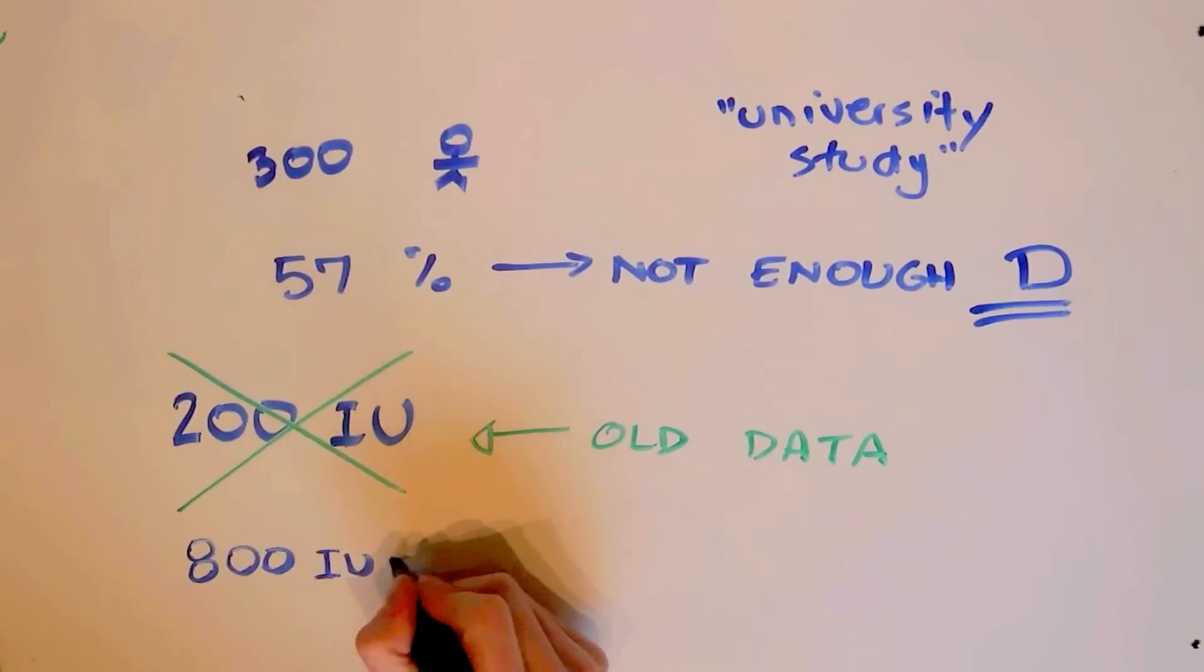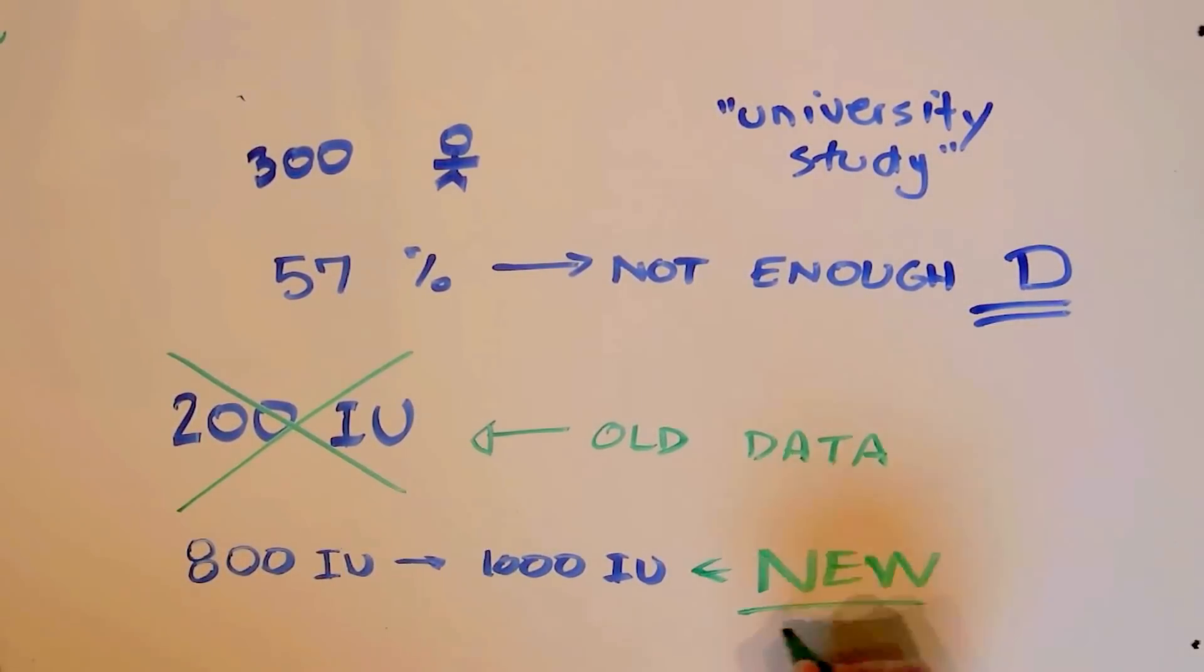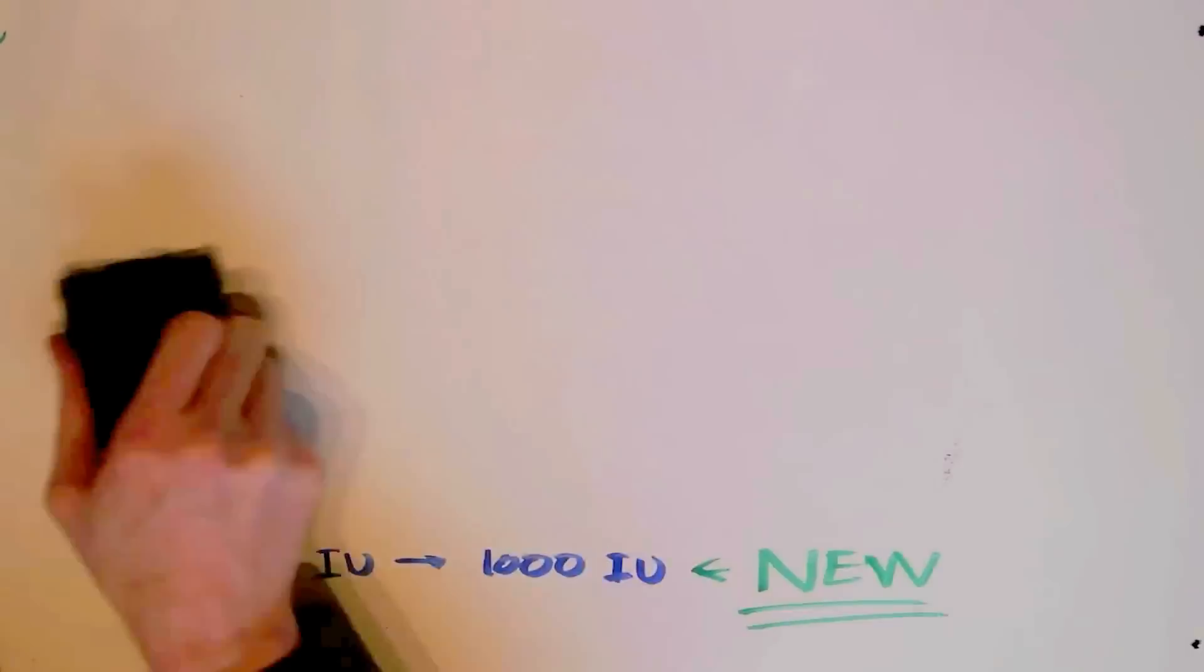There's been some more recent data which says that an intake of 800 to 1,000 IU is, even over long terms, is closer to what we actually need. So now let's recap here. We need 800 to 1,000 IU of vitamin D.